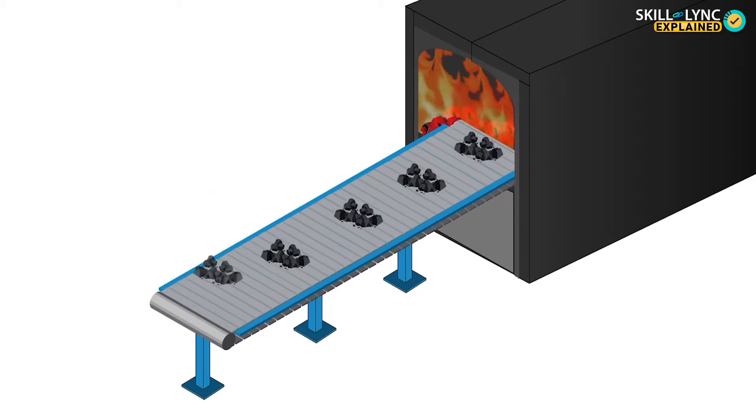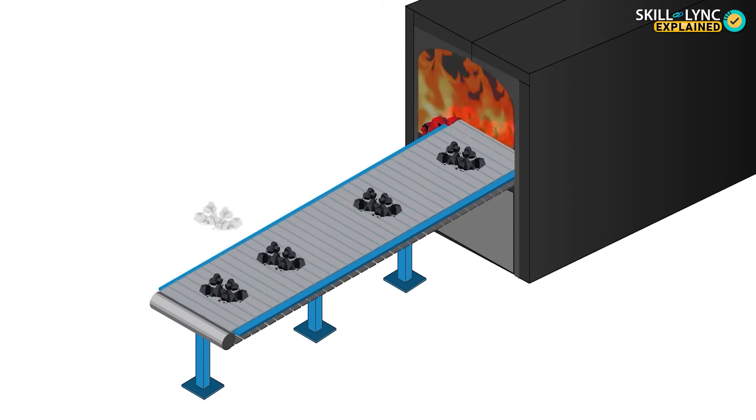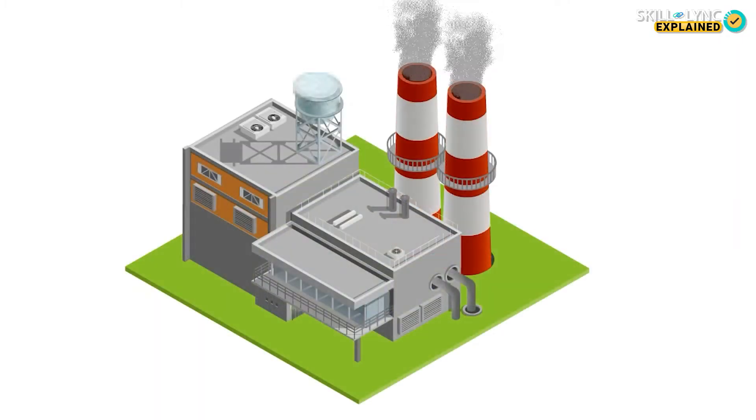In one of our previous videos, we covered hydroelectric power generation. But let's not forget the fact that we are still highly dependent on thermal and nuclear power plants. Coal is the primary fossil fuel we burn in thermal power plants to generate heat, and this burning of coal produces large amounts of carbon dioxide. While some of the carbon dioxide produced is absorbed by whatever little green cover we have left on the planet, most of it is left in the atmosphere, causing global warming.